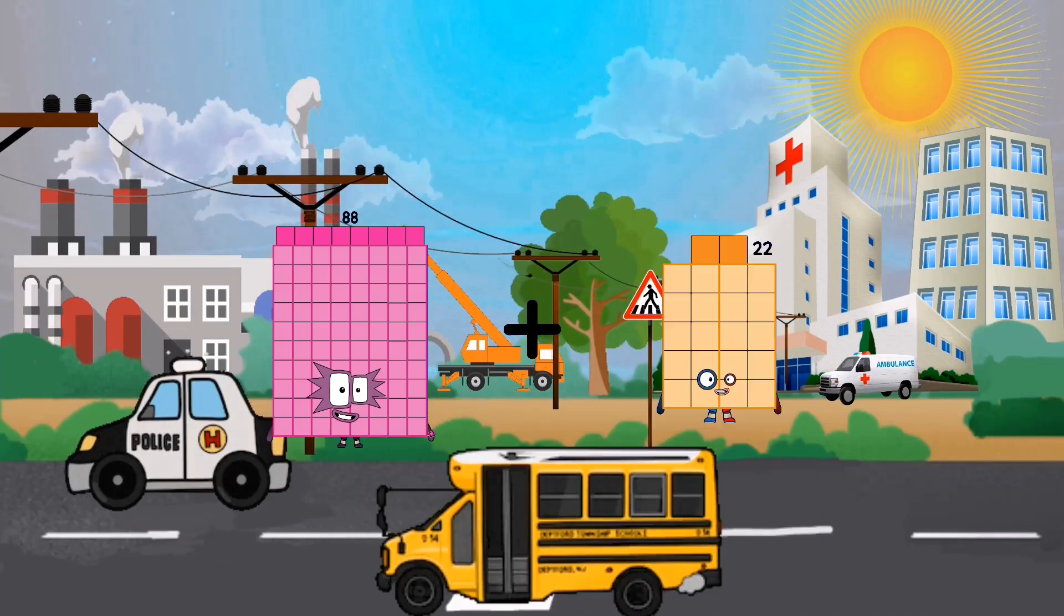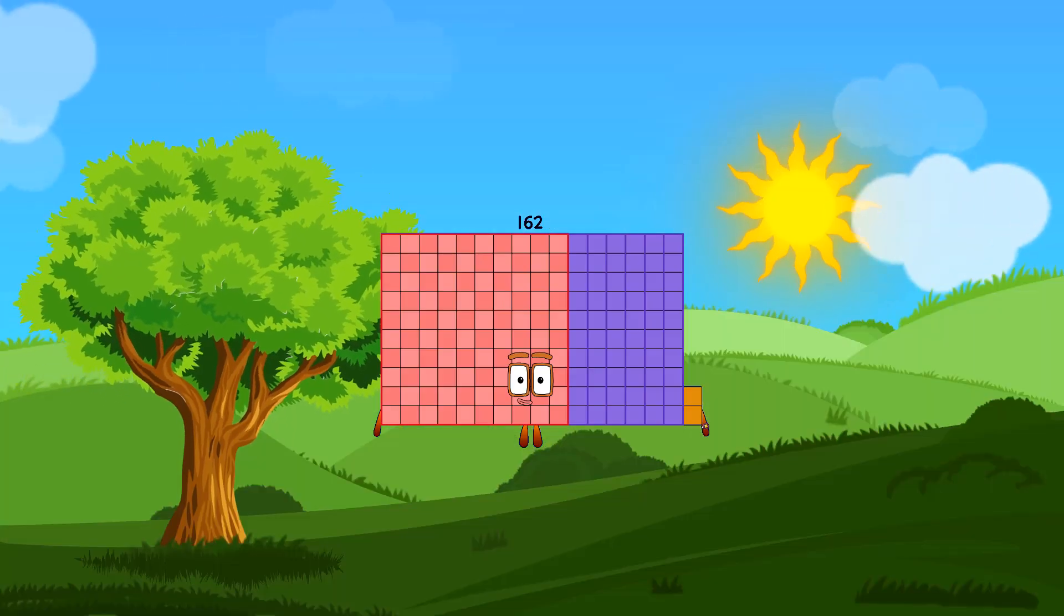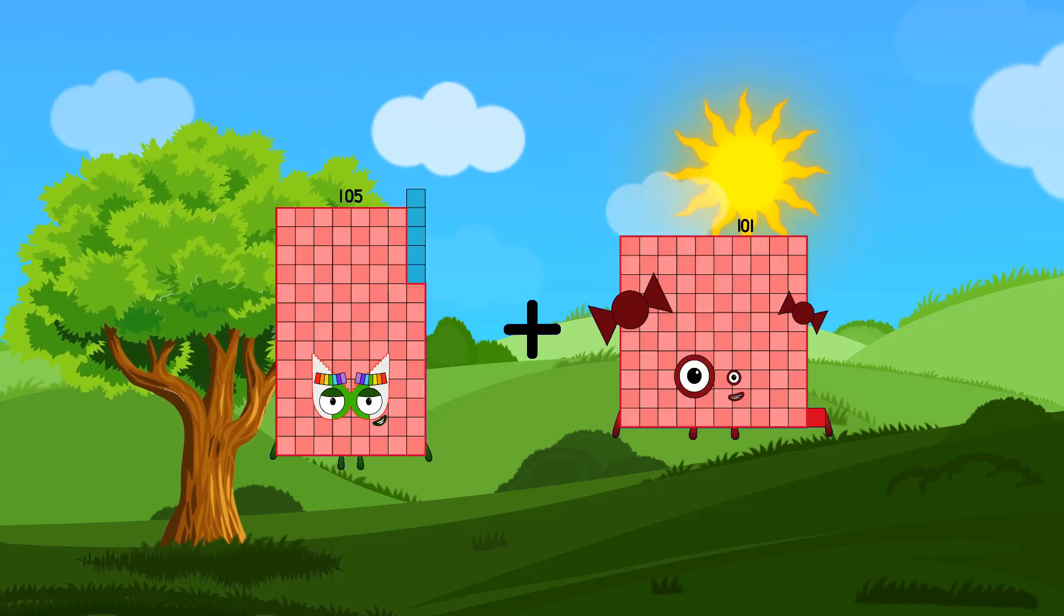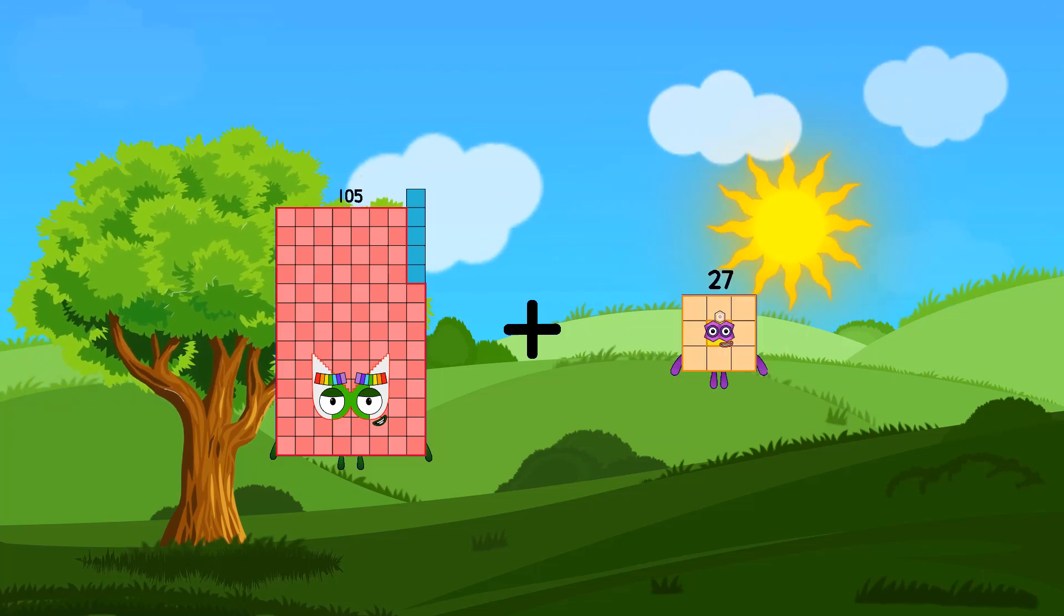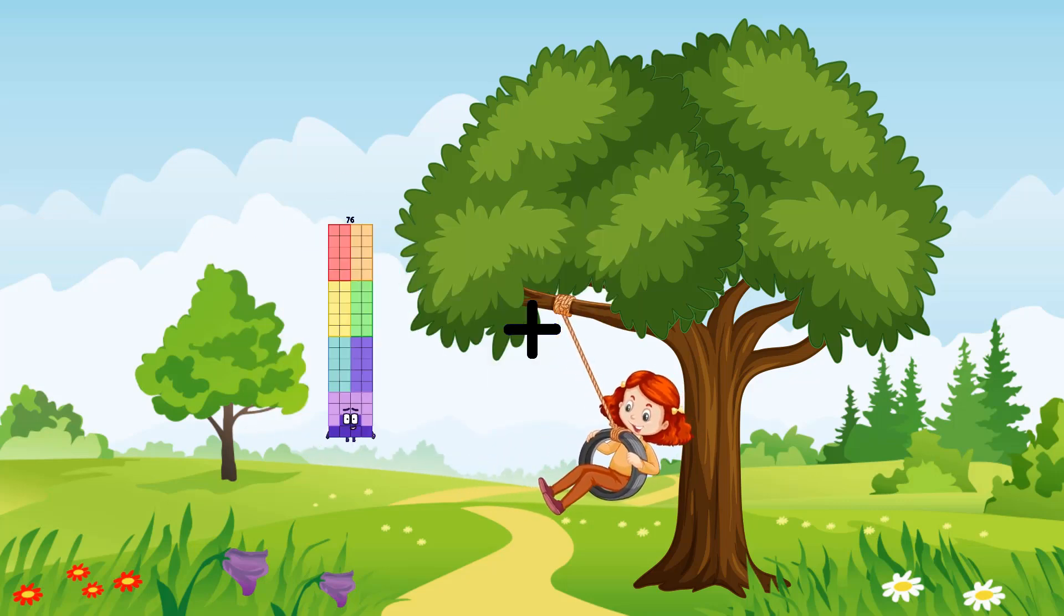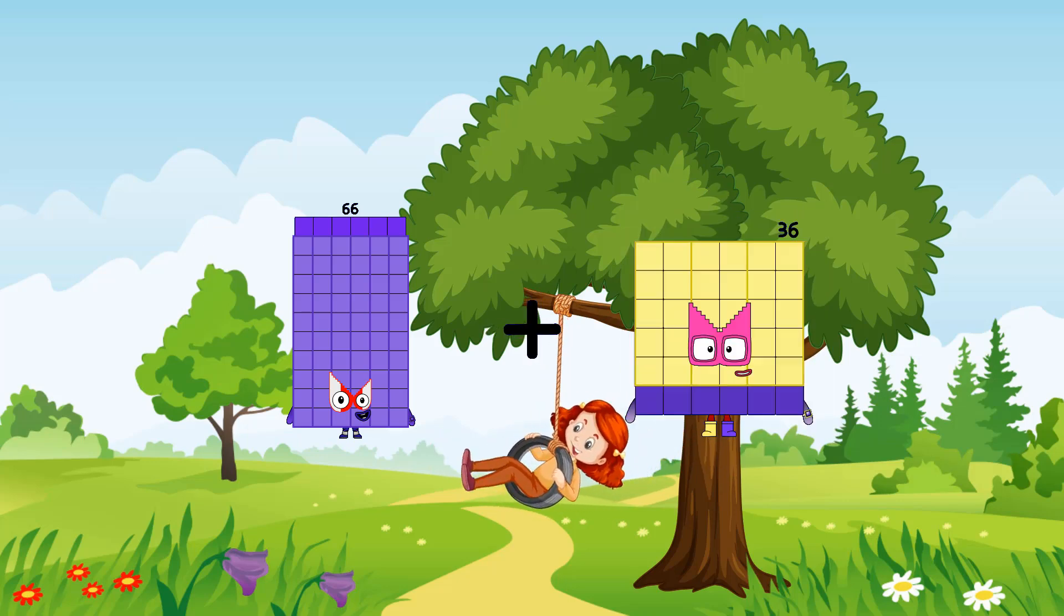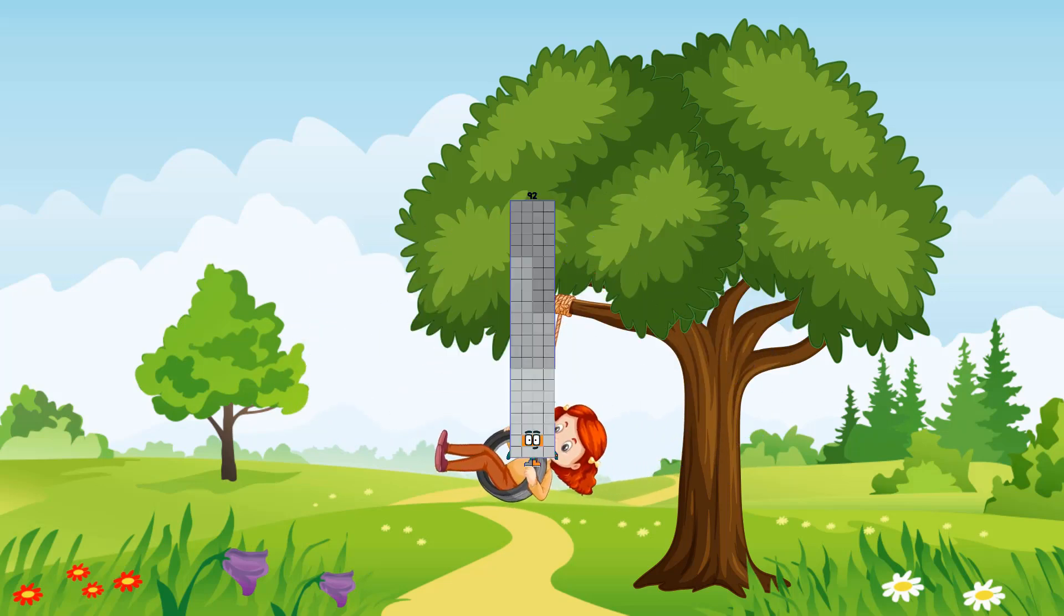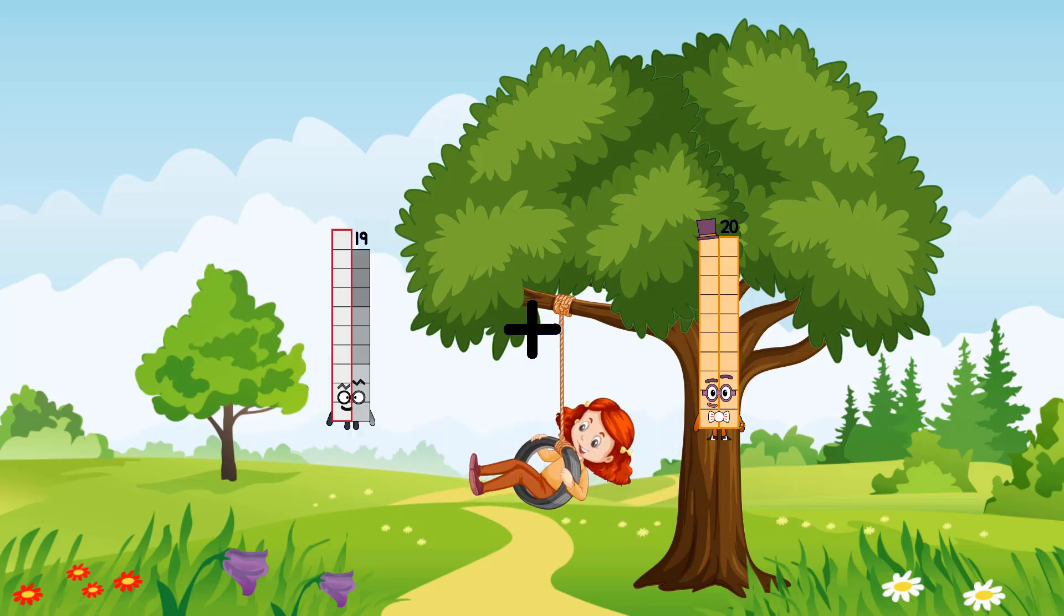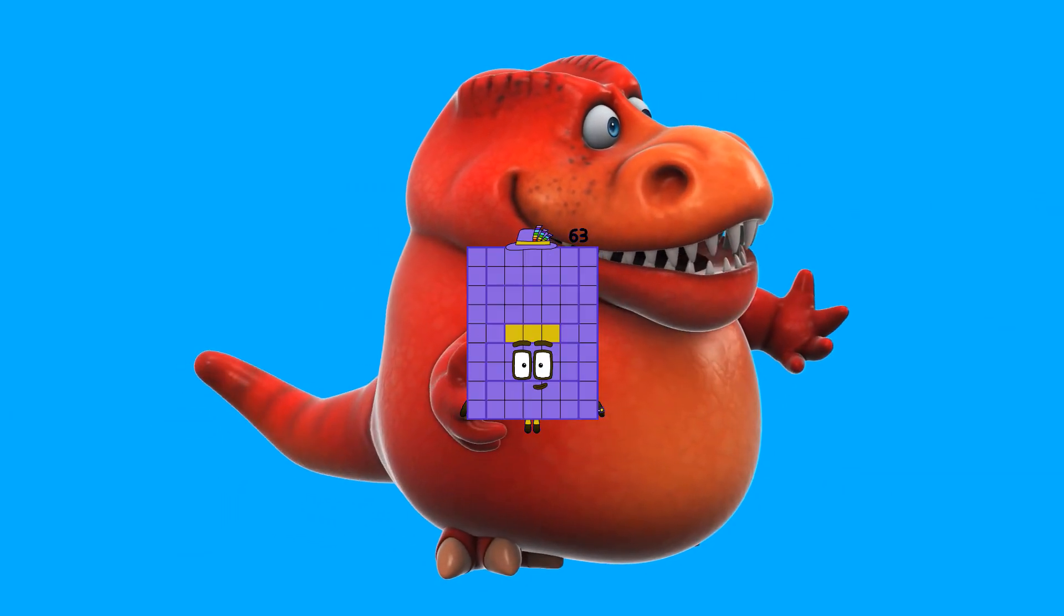88 plus 74 equals 162. 105 plus 27 equals 132. 105 plus 66 plus 26 equals 92. 19 plus 44 equals 63.